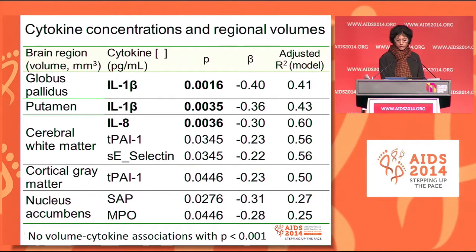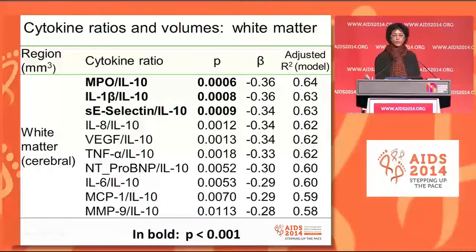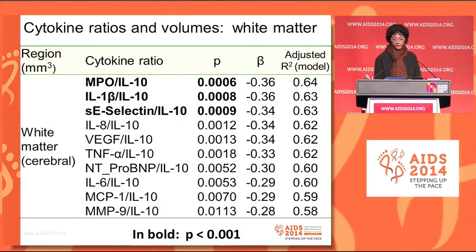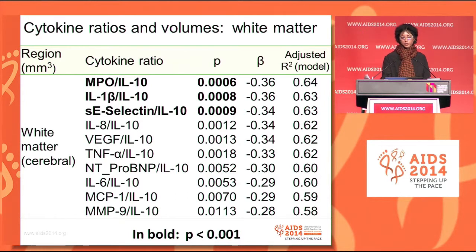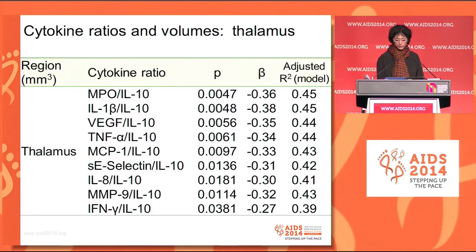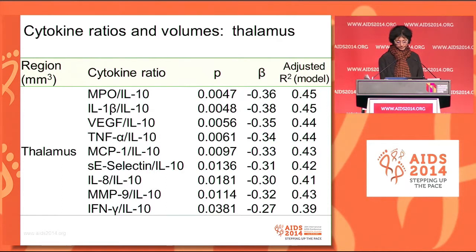However, when we considered cytokine ratios to IL-10, we found that many more cytokines were involved and the p-values were much more significant. These are negative associations between cytokine ratios over IL-10 and white matter volume. We found similar results for thalamus volume — about nine cytokine ratios were negatively associated with thalamus volume.